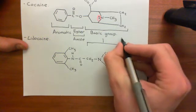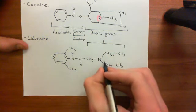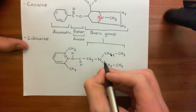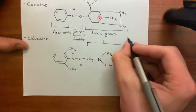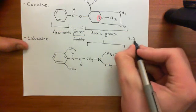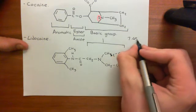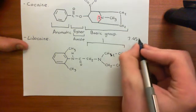This basic group will be able to accept a proton onto the lone pair of electrons that the nitrogen atom here has, and that will make the whole molecule positively charged. These local anesthetic molecules will generally be protonated under physiological pH of around 7.45.